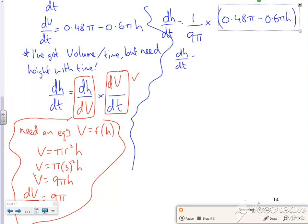Right, so the pi's will all cancel, so I've got dH by dT is 0.48 over 9 minus 0.6 over 9H. And what's quite nice, if you put the 0.48 over 9 in the calculator, you get 4 over 75 minus 1 over 15H. So the 1 over 15H is actually 5H over 75, and that's kind of where this bit comes from.